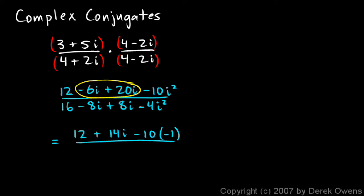Okay, so that'll simplify some more. But let's look at the denominator. The minus 8i and the plus 8i cancel each other out, and we're left with 16 minus 4i squared. And again, the i squared is negative 1.